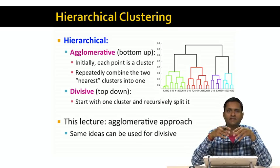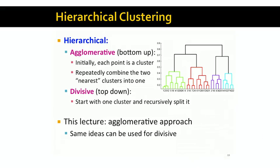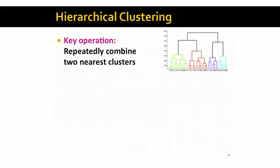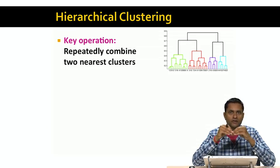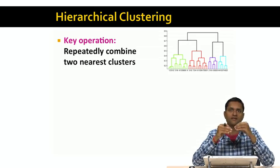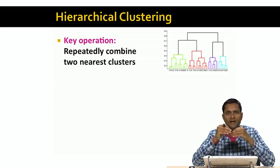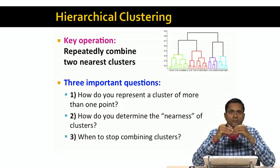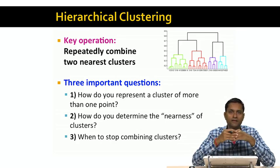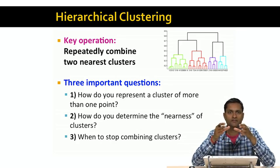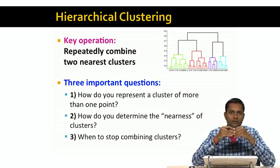The ideas in the lecture can be easily adapted to divisive methods as well. The key operation in hierarchical agglomerative clustering is to repeatedly combine the two nearest clusters into a larger cluster. There are three key questions that we have to answer in order to build a hierarchical clustering algorithm. The first is: how do you represent a cluster of more than one data point? We need a representation of a cluster so that we can figure out which clusters are close to each other.